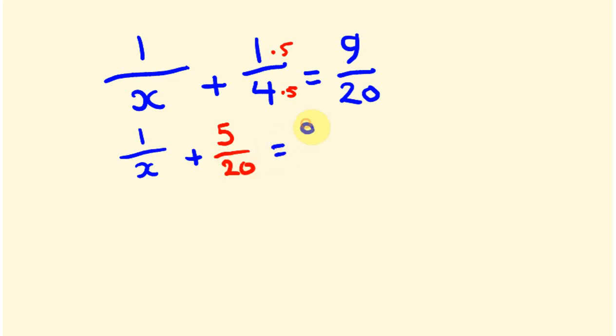So now what we have to do is get rid of this 5 over 20 - we're going to put it over this side of the equation. To do that, we take it away, so we're going to take 5 over 20 off both sides. When we do that we end up with 1 over x, and we take it off this side too, so 9 over 20 take away 5 over 20 is 4 over 20.